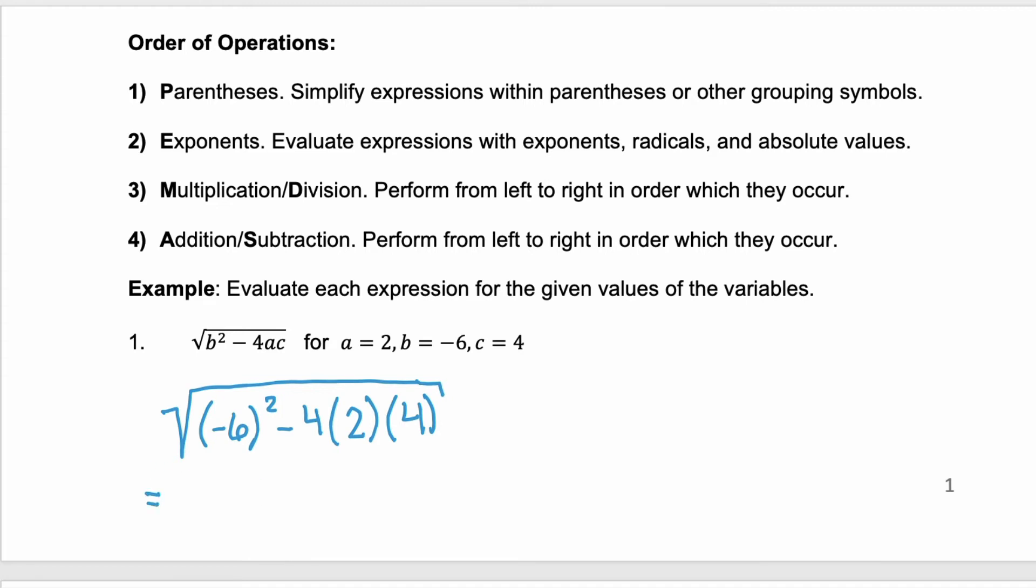First would be our parentheses. So we're going to do this negative six, squared. Negative six times negative six is a positive 36. And then we have four times two times four.